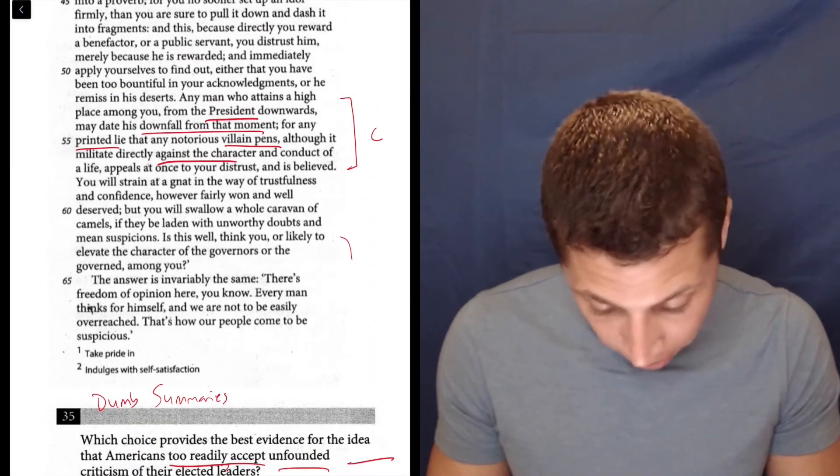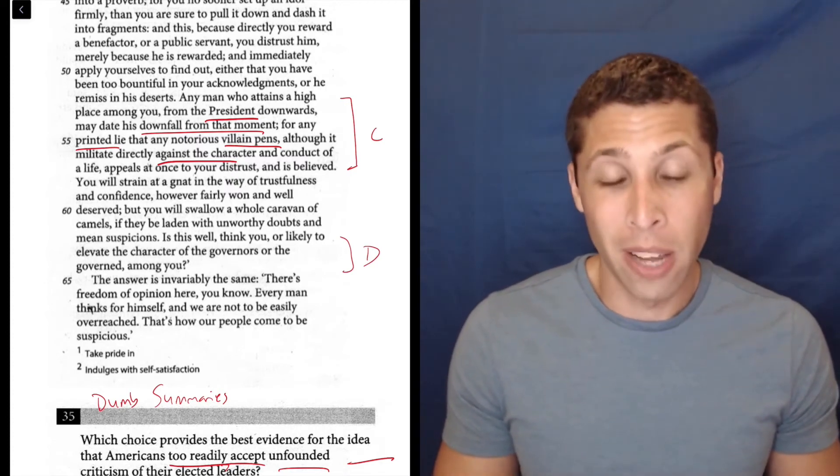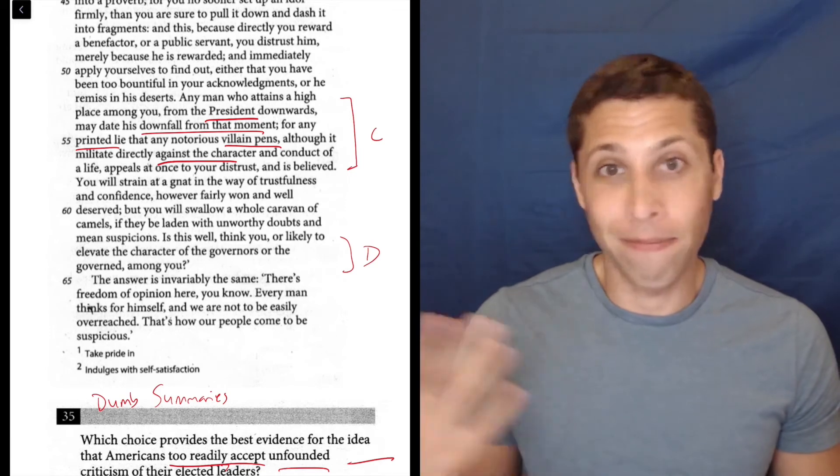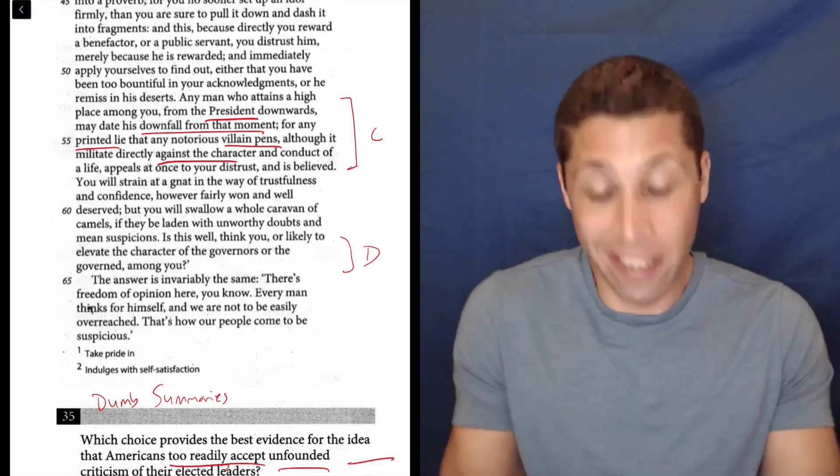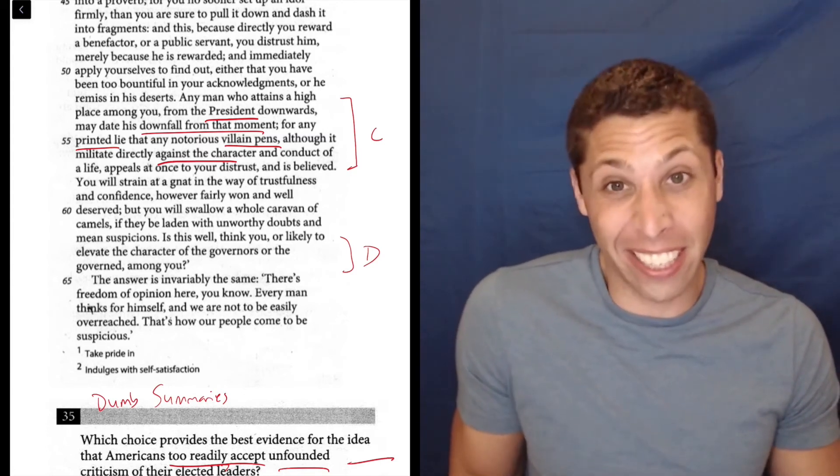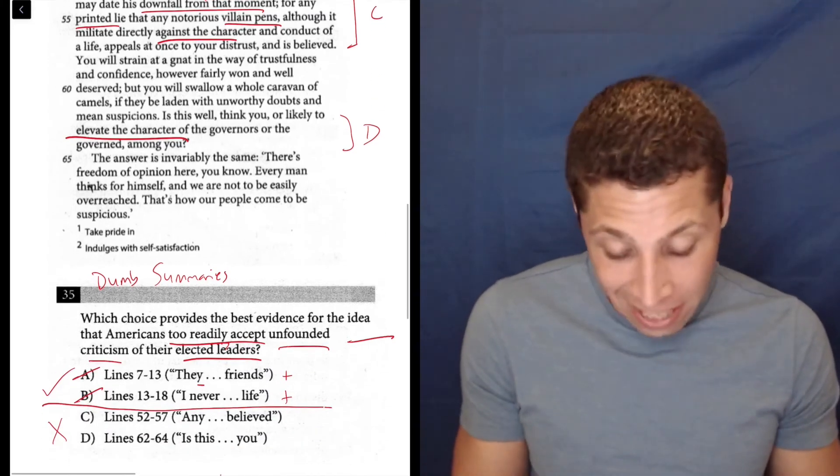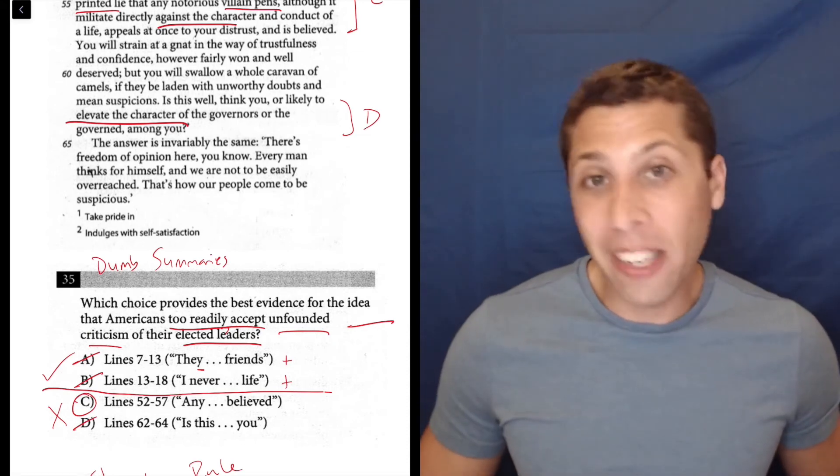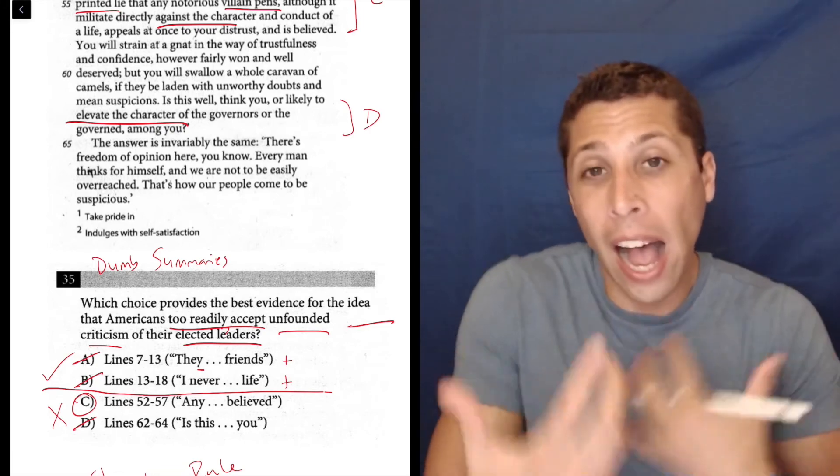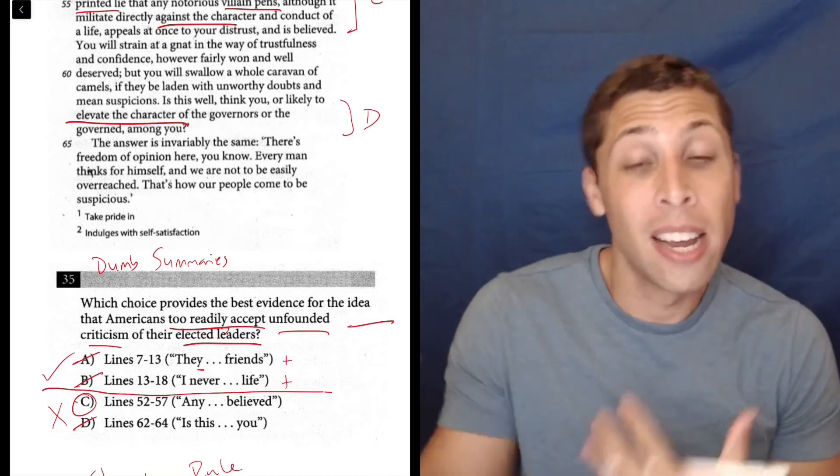Let's look at D, 62 to 64. Is this well, think you, or likely to elevate the character of the governors or the governed among you? Well, this is a question and it's maybe talking about governors, but it doesn't seem to be talking about criticism. I don't see elevating the character, if anything, that maybe seems the opposite of criticism. So it doesn't seem to have what I need. And so I would pick C here, maybe not completely understanding that line reference, but because I knew what I was looking for and I was able to kind of keep it dumb, I knew when I wasn't finding what I needed.